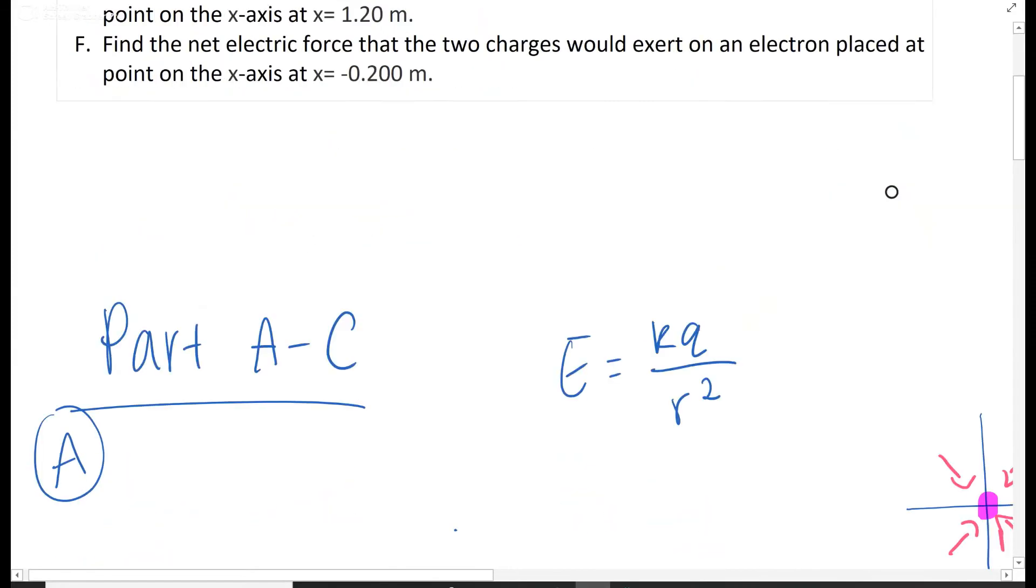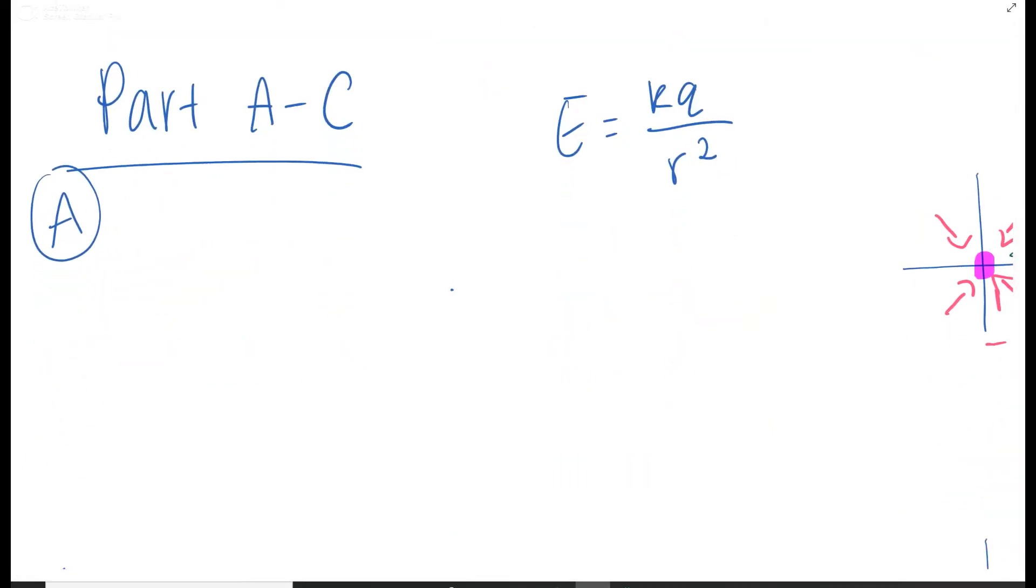So let's go down to part A and C. For this, we're using this nice equation right here. E equals KQ over R squared, where E is the electric field, K is the constant, Q is the charge, and R is the distance.